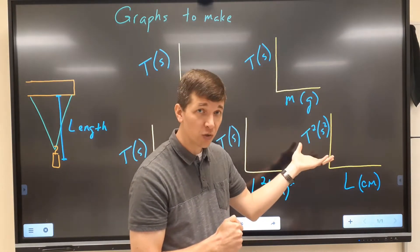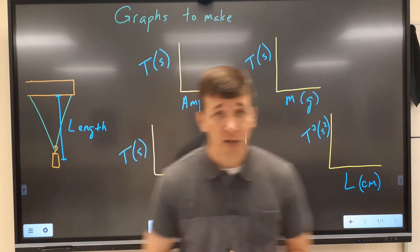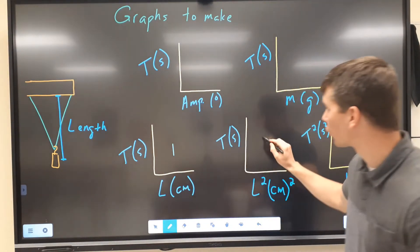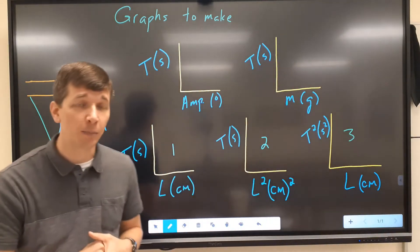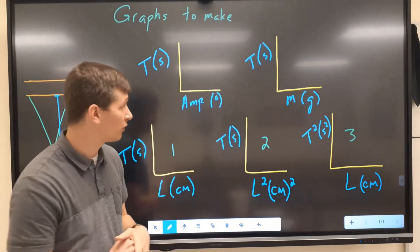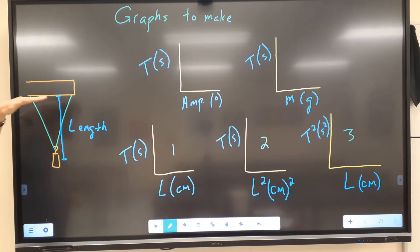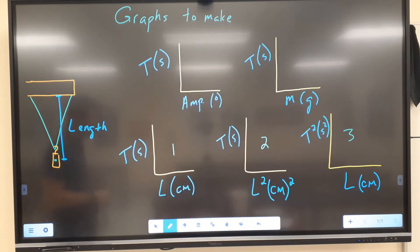After we've measured the period, square that and graph it against the length. Your questions are going to ask you, out of these three period versus length graphs, which one truly shows you the best relationship between the period and the length of your string. When we measure the length of the string, we're measuring from the pendulum clamp down to the middle of the mass — to the center of mass for that pendulum.